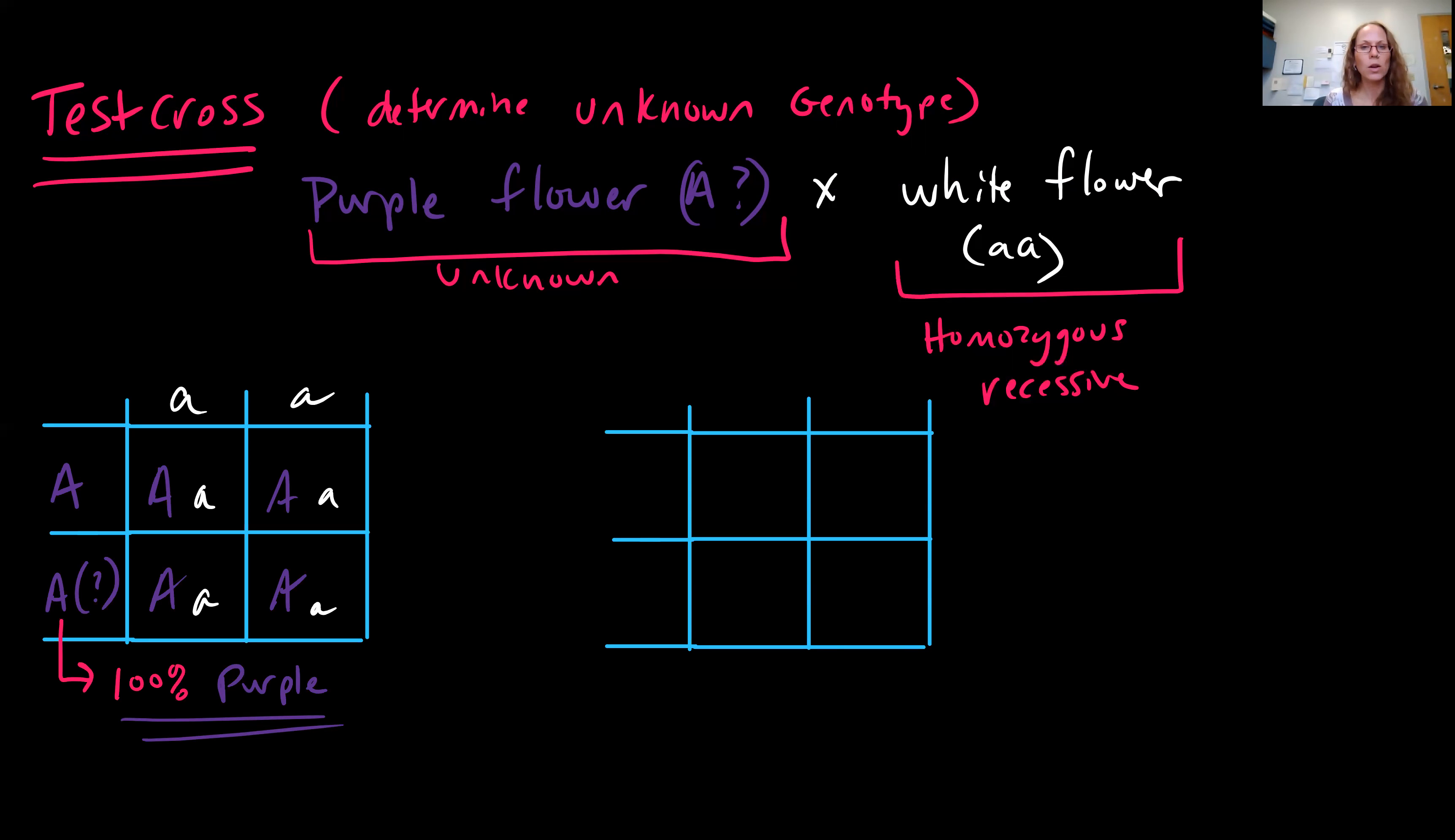If, instead, your unknown purple flower is heterozygous, when you do your cross, you're going to see 50% purple and 50% white. So, test cross are completed using a homozygous recessive with your unknown, and then looking at the outcome of your offspring, you're able to determine whether that original individual was a homozygous dominant or a heterozygous individual.